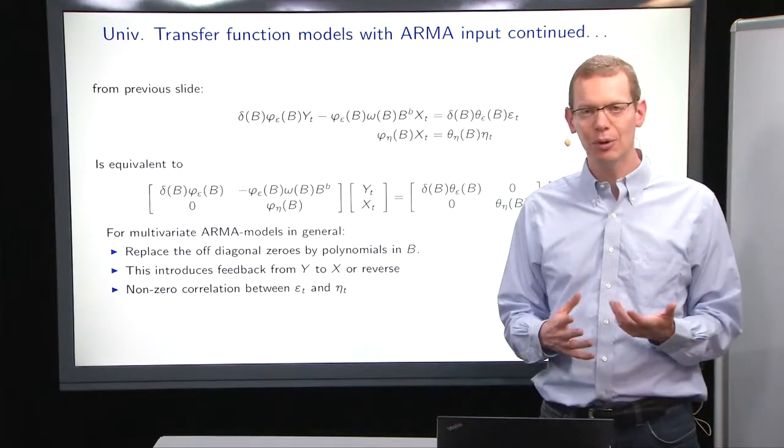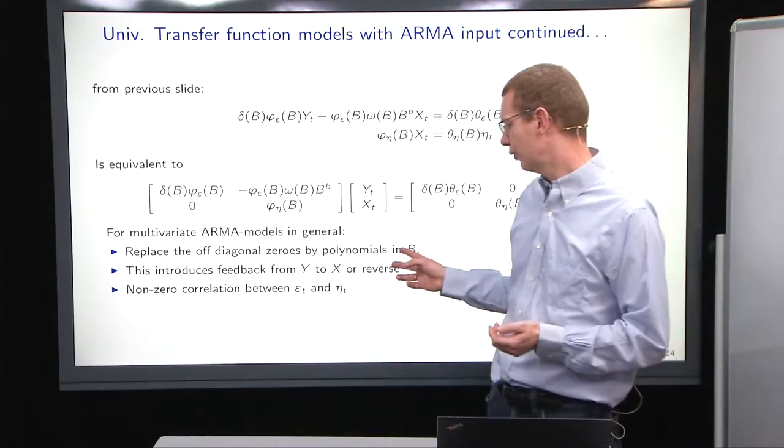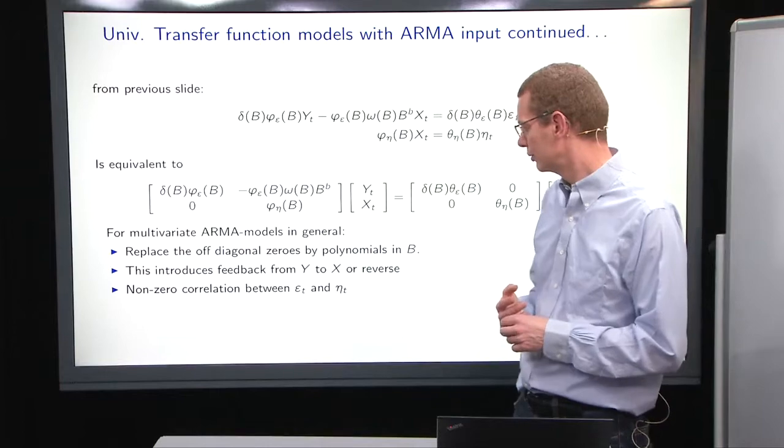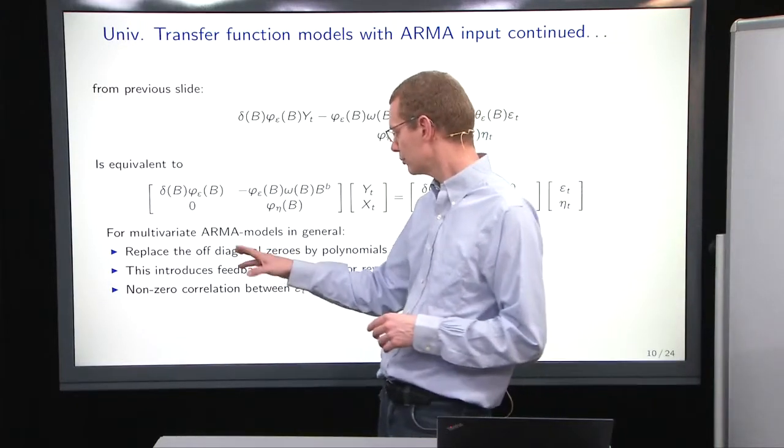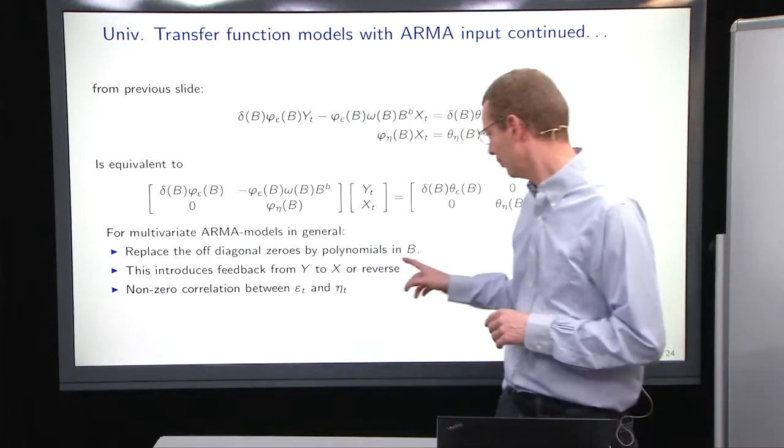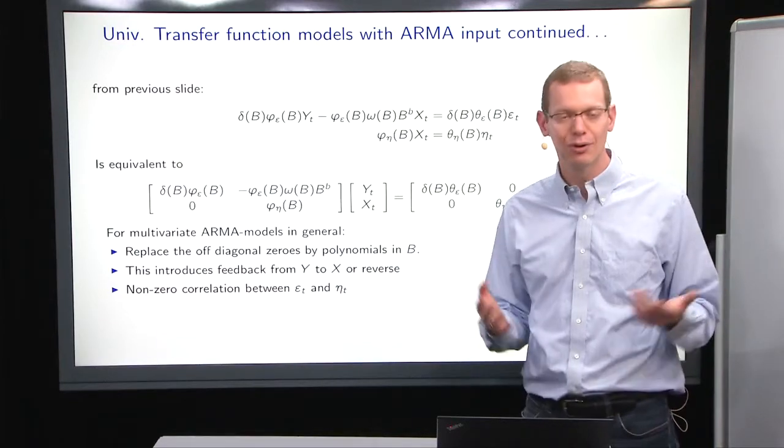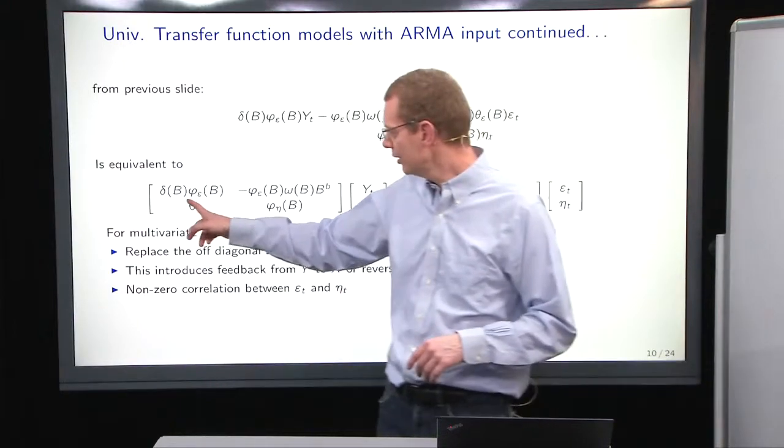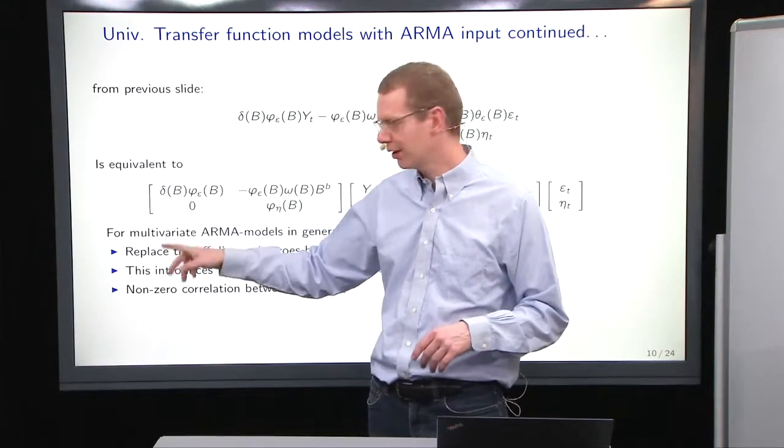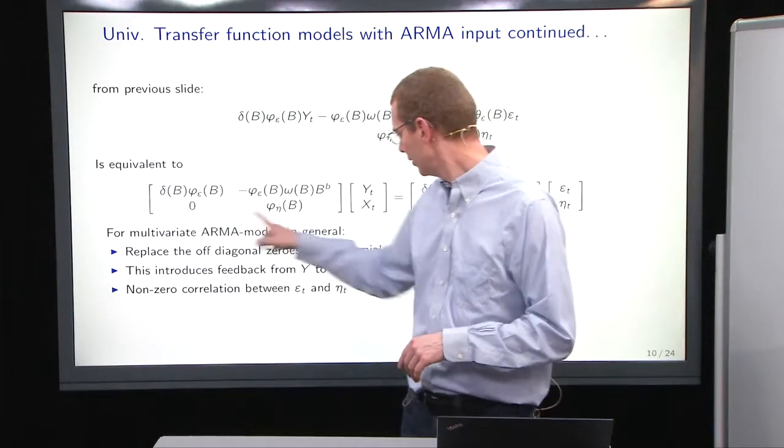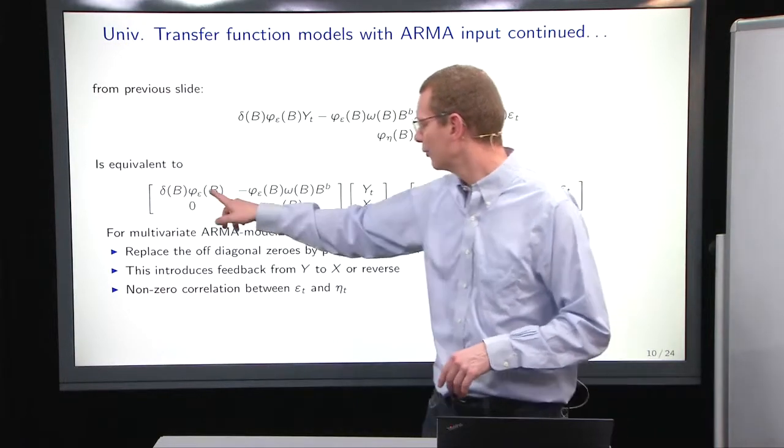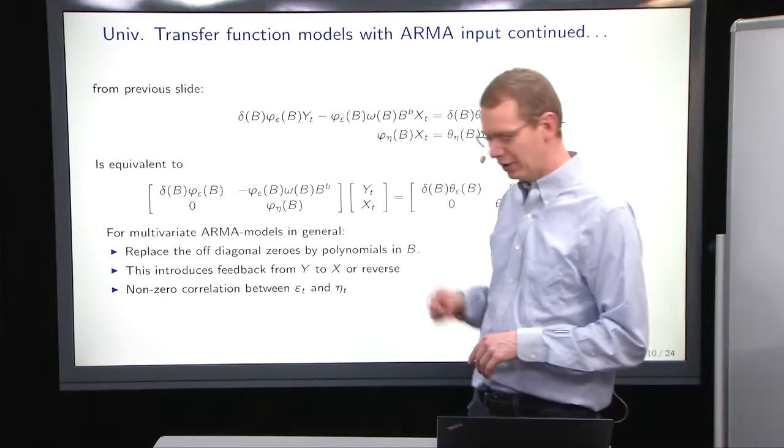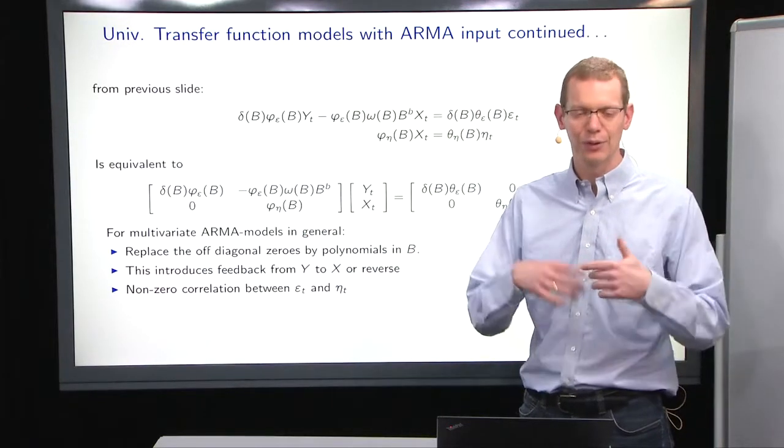If you want to go for a general ARMA model, what you need to do is, first of all, you can consider having all diagonal zeros here. You can replace that with polynomial B. Of course, that's fairly straightforward. And if you do that here, well, then you create a feedback from y to x. Currently, you have from y to y, and from x to y, and from x to x. That is where you have connections.